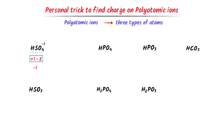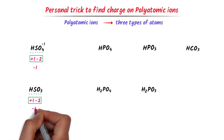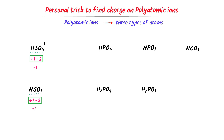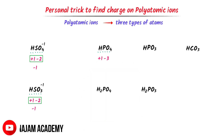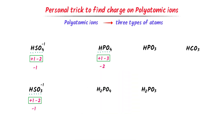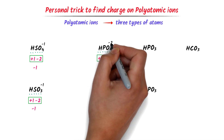Similarly, in the case of hydrogen sulfite, the charge on sulfite SO3 is negative 2 and hydrogen has positive 1 charge. Positive 1 plus negative 2 equals negative 1, so the charge on hydrogen sulfite is negative 1. In the case of hydrogen phosphate, phosphate has negative 3 charge and hydrogen has positive 1 charge. Positive 1 plus negative 3 equals negative 2, so hydrogen phosphate has a negative 2 charge.